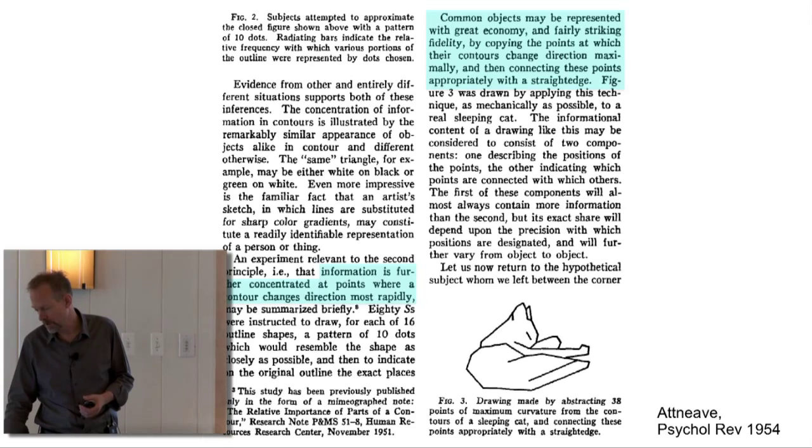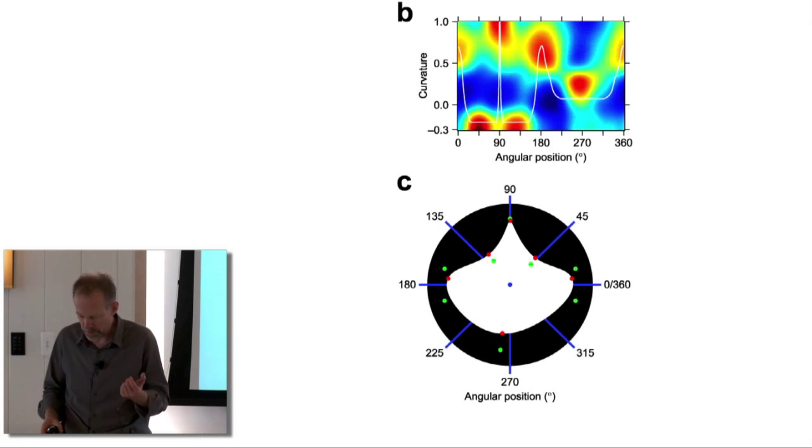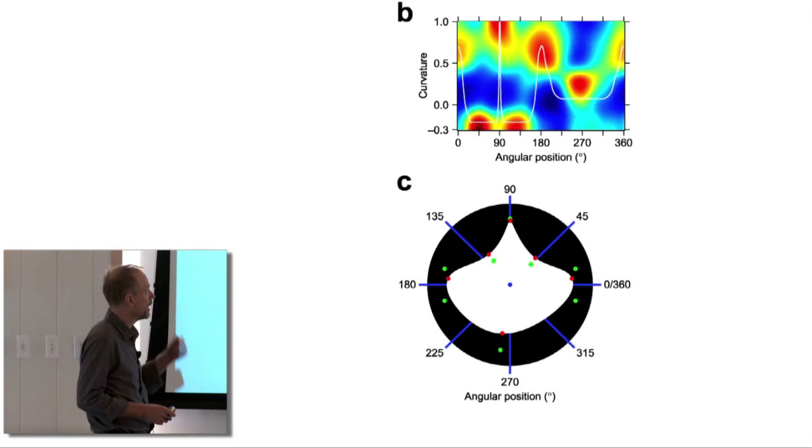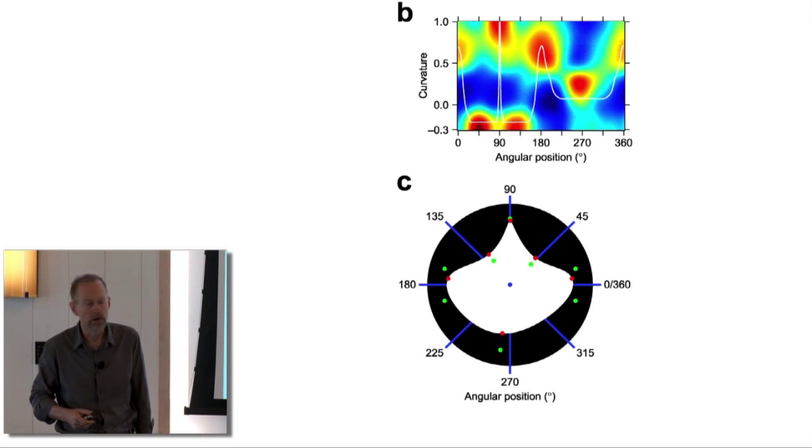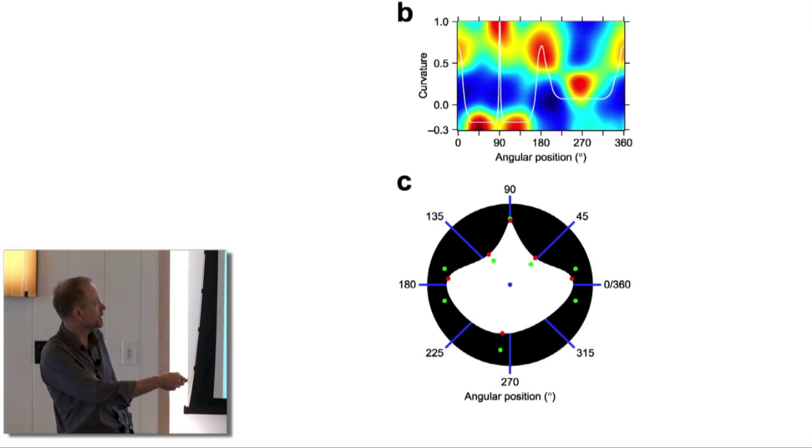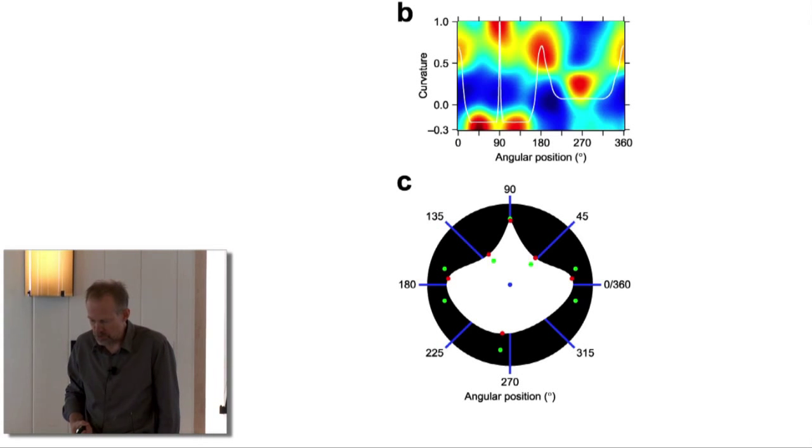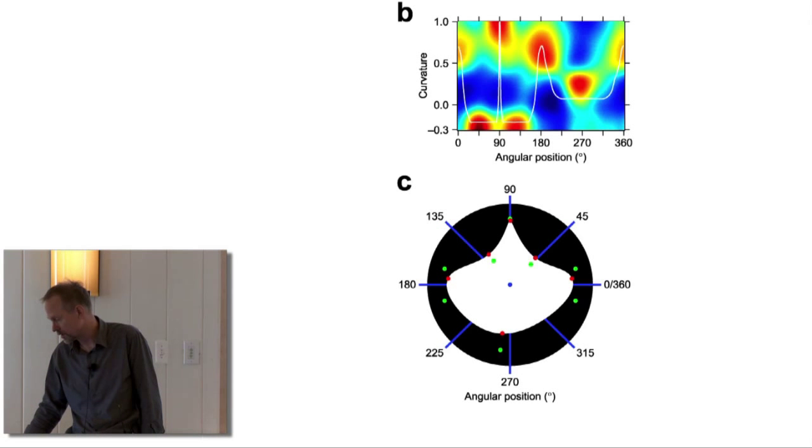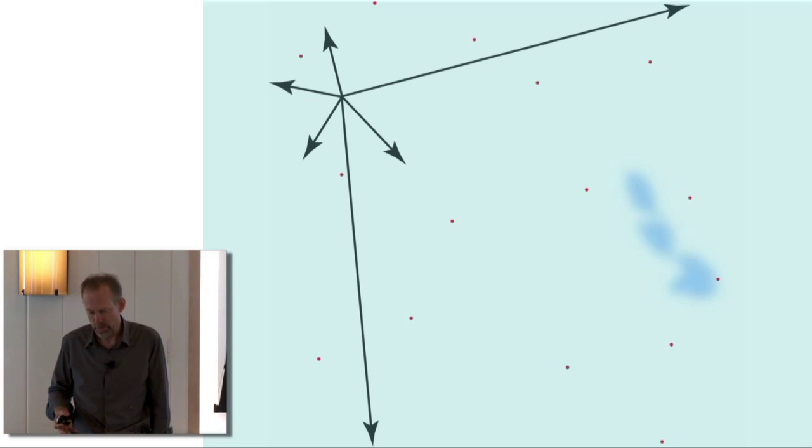In a recently published study done by graduate students Eric Carlson and Russell Rasquina, they went back and first of all tried to test whether this bias towards acute curvature is real. Maybe we got that result just because we used a lot of really curvy stimuli. And if it is real, does it really relate to this idea of compression?